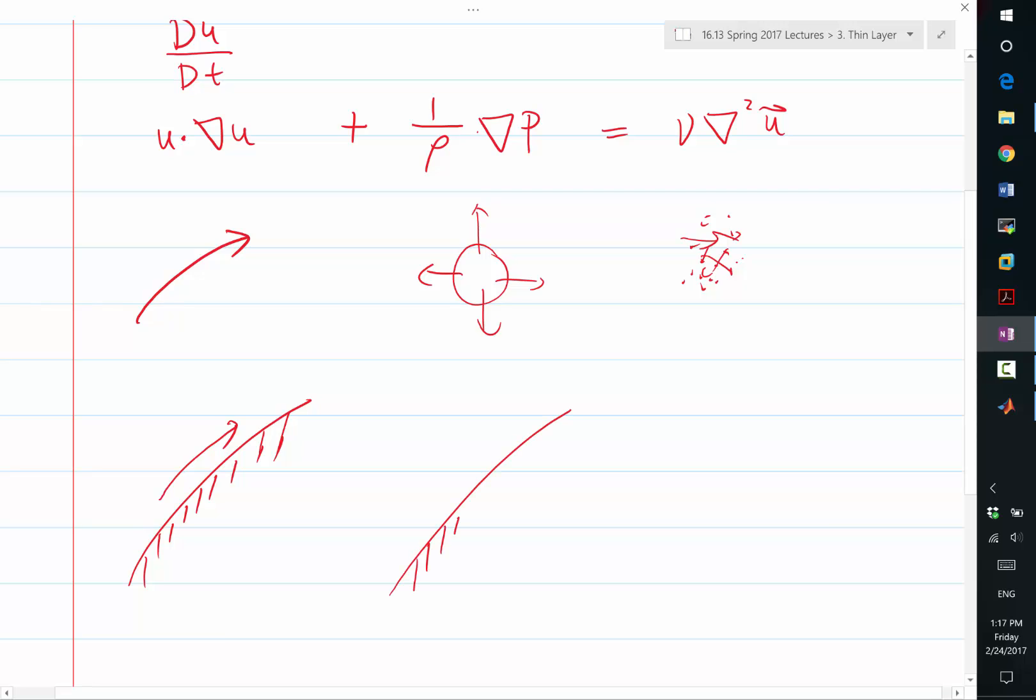And the pressure term is also easy because we know the effect of normal pressure gradient is essentially zero. Not only that, the horizontal pressure gradient is pretty much the same anywhere inside the boundary layer.